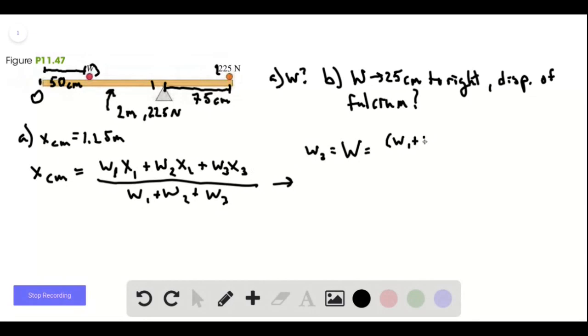If you solve this, it's w1 plus w2 times the center of mass location minus the weighted location of 1 and the weighted location of 2, divided by the distance of the weight from the center of mass, x_cm.